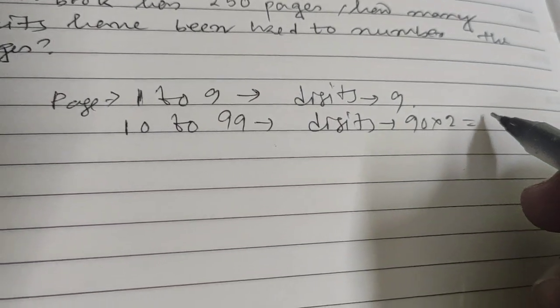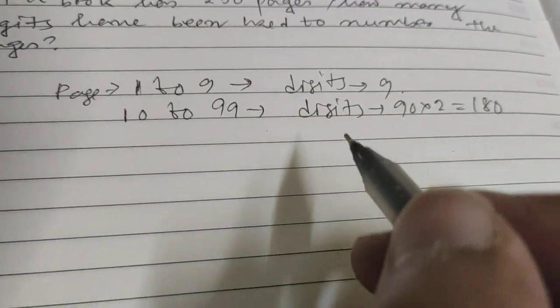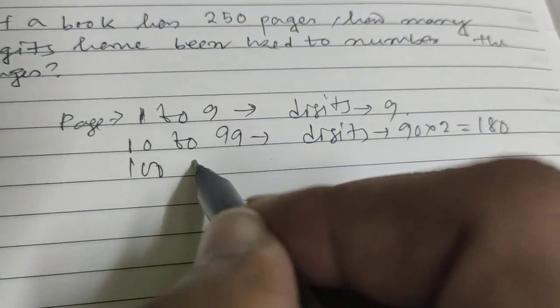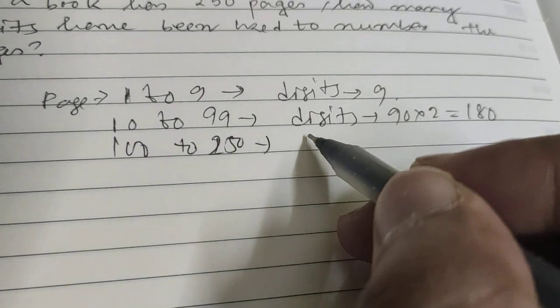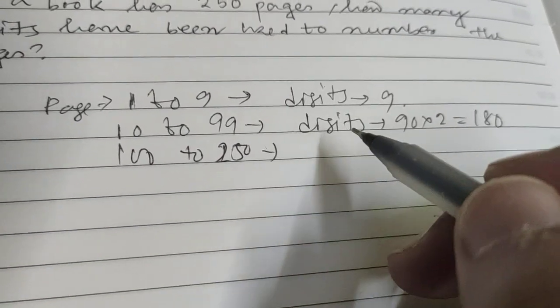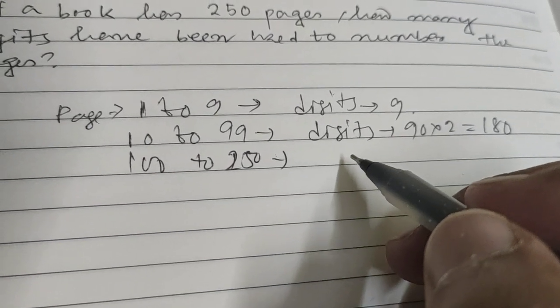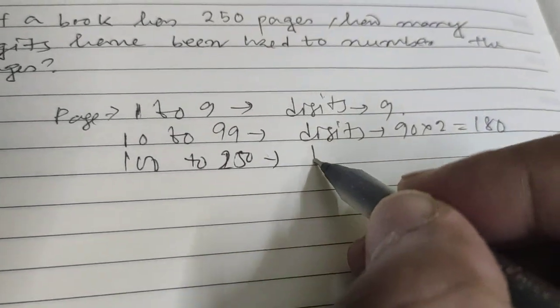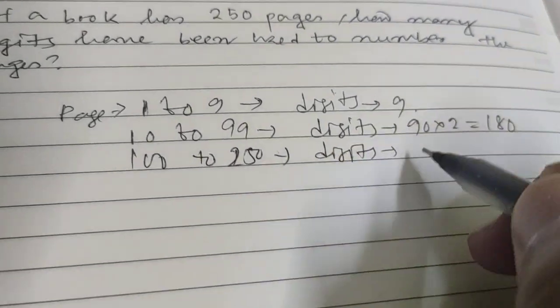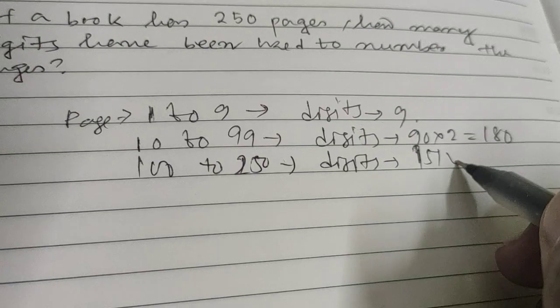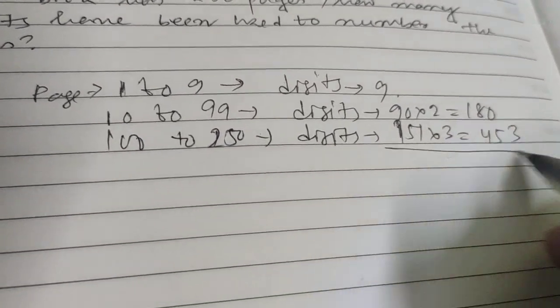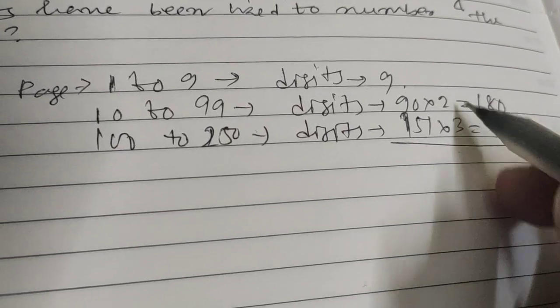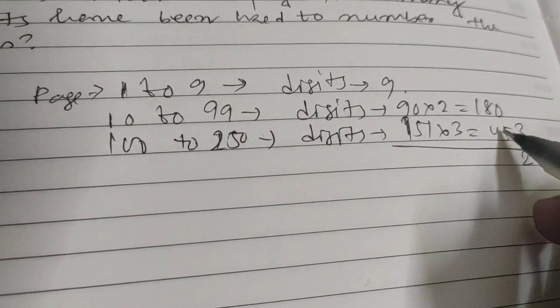From 100 to 250, there are 151 numbers, and in each number we will use 3 digits. So total digits is 151 times 3, which is 453. So the total is 9, 3 is 12, 5, 1, 6, 8 is 14, then 6.